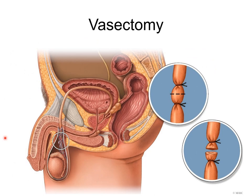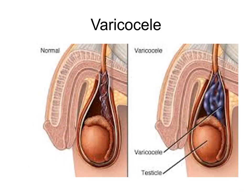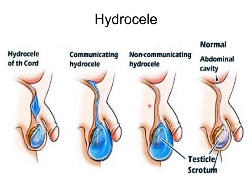Vasectomy is a surgical procedure for male sterilization during which the vas deferens is cut and tied or sealed, preventing sperm from entering the male urethra and thereby preventing fertilization. Varicocele is an abnormal enlargement of the pampiniform venous plexus in the scrotum. Hydrocele is the accumulation of serous fluid in the body cavity; sometimes it develops in a remnant of the processus vaginalis along the Spermatic Cord, called an encysted hydrocele of the cord. If the processus vaginalis remains patent, it can communicate with the general peritoneal cavity.